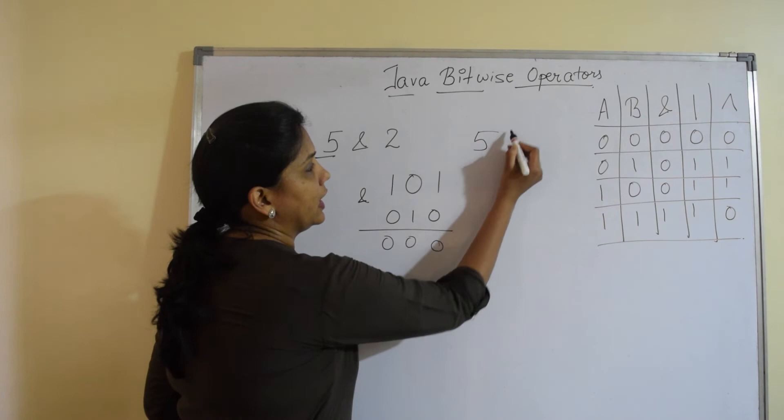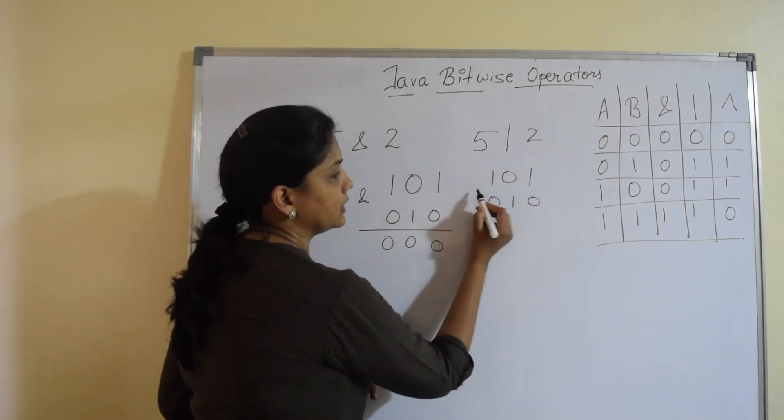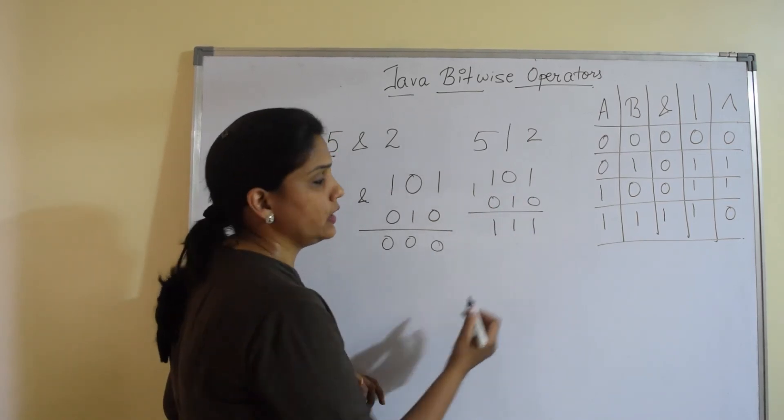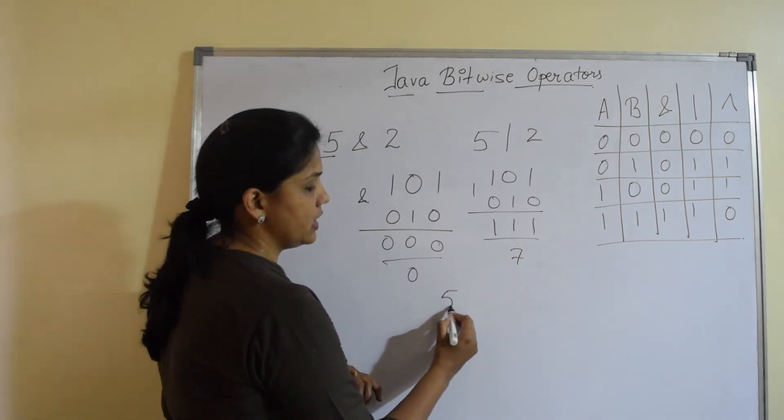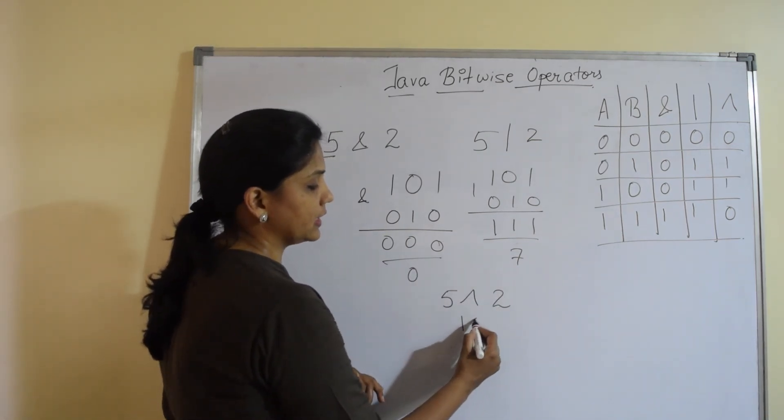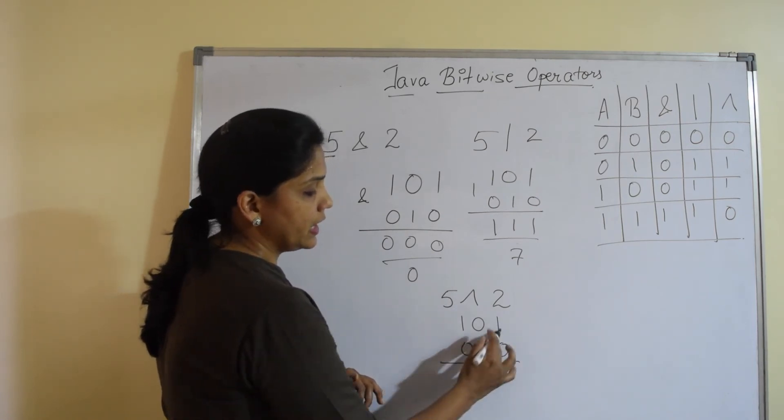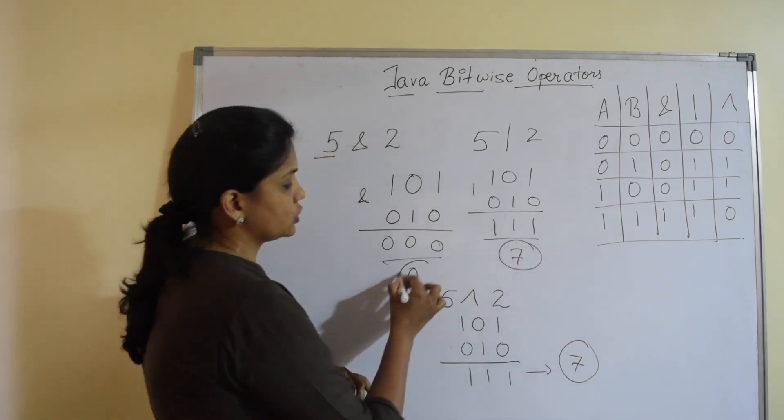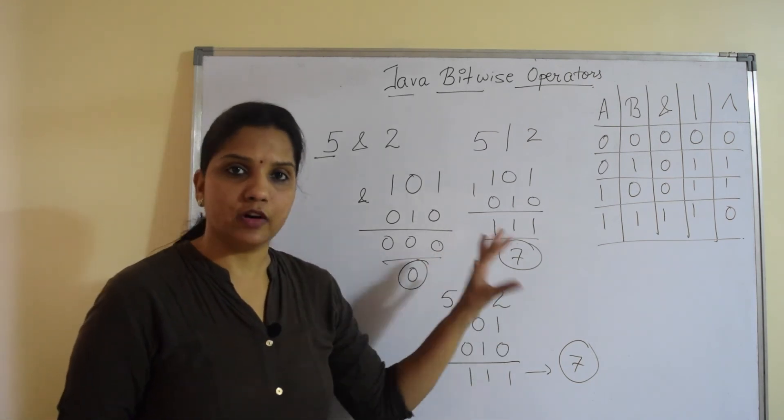On the same values, if I want to apply the OR operator, then any bit is 1, the output is 1, we get 7. Here we get 0 and if I say 5 XOR 2, that is 101 and 010, inverted bits is 1, we get the output as 7. So this is how the bitwise operators in Java work. Let's go ahead and see in practical.